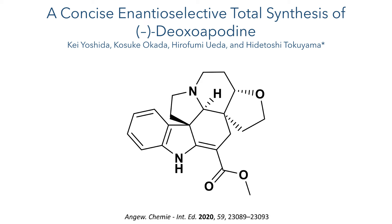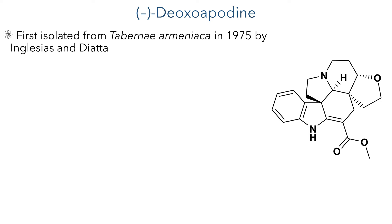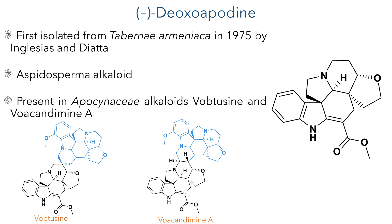This compound was first isolated by Inglesias and Diata from the Tabernae montanae plant in 1975. It is part of the Aspidosperma family of alkaloids, which feature a distinctive pentacyclic system at the core of the molecule. We have seen these molecules before in the synthesis of minovincine and Aspidofractinine. This molecule is also present in Apocynaceae alkaloids Vobacine and Voacangamine A, which are formed by dimerisation of this molecule in two different ways.